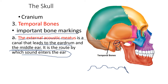The tympanic membrane will vibrate and move the three ossicles — coded H-A-S — until it hits the inner ear where the cochlea and vestibule are located. This is a very important structure — the external acoustic meatus.